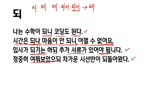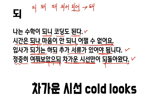정중히 여쭤보았을 때. You also have 되 here. You put 을 때 because this syllable has a final consonant. 정중히 is 'respectfully.' I asked them respectfully. 차가운 시선만이 되돌아왔다. This 되 means 'contrarily.' Contrarily, a cold appearance returned — they showed a cold face to me.